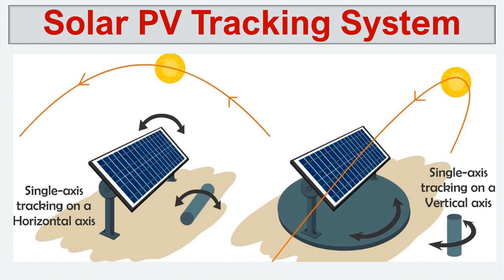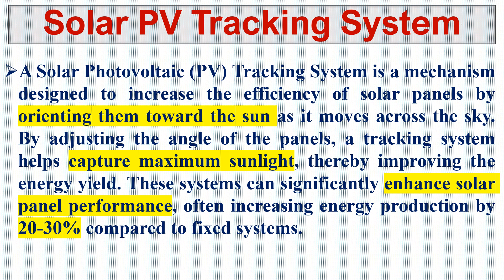From morning, the sun rises in the east and in the afternoon it sets in the west. So we need to track the direction of the sun — that is the vertical axis. If you look at the single axis tracking system on the vertical axis, we also need to rotate the panel in order to capture solar radiation in the right direction.